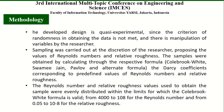As for methodology, the research design was quasi-experimental since the criterion of randomness in obtaining data was not met, and there was manipulation of variables by the researchers. Sampling was carried out at the discretion of the researchers, proposing specific values of Reynolds numbers and relative roughness. Samples were obtained by calculating through the respective formulas: Colebrook-White, Swamee-Jain, Pavlov, and the Alternative Formula. The Reynolds number and relative roughness values used were evenly distributed within the valid limits of the Colebrook-White formula.